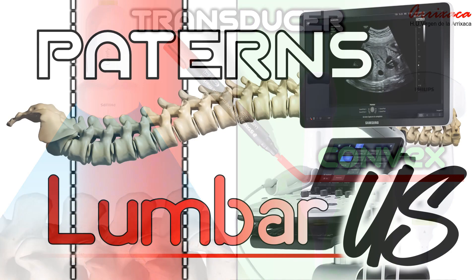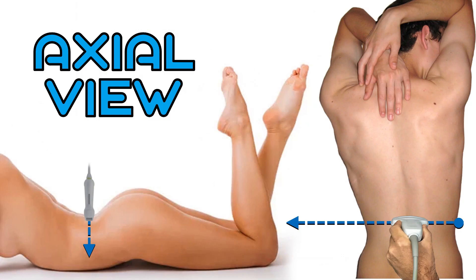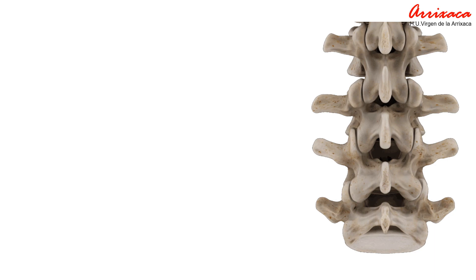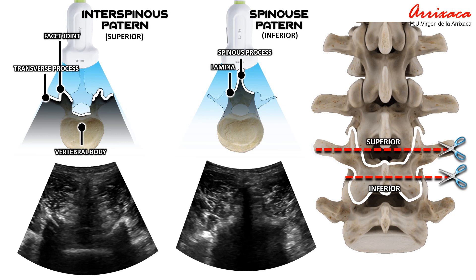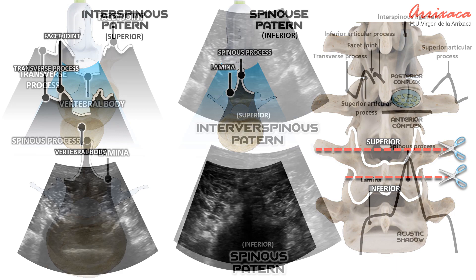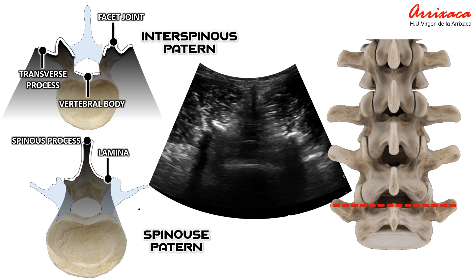Let's talk about sonography. If we know the different patterns we can find in the axial and sagittal plane, we will be able to perform approaches to the different vertebral structures according to the pathology. In the axial plane, the shape of the vertebra will change depending on whether we scan at the level of its upper or lower aspect. In the interspinous pattern, the shadow of the facet joint, transverse process, and vertebral body will be visible. In the spinous pattern, the shadow generated by the spinous process and vertebral lamina are clearly identified. The spinal canal and the structures that cross it will only be visible in the interspinous pattern. In the spinous pattern, the acoustic shadow generated by the spinous process and lamina will not allow penetration of ultrasound. These two patterns will be repeated throughout the scanning of the lumbar spine in its axial axis.